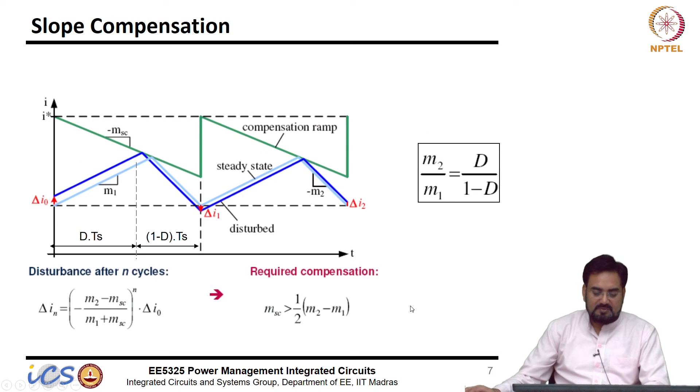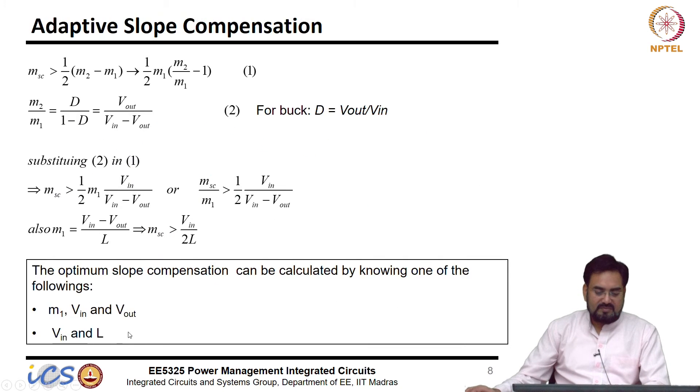So, that is the condition we need to meet. So, now, this slope compensation, your basically the compensating ramp slope required is greater than M2 minus M1 by 2 which is nothing but I will take M1 common and it becomes half of M1 into M2 over M1 minus 1.